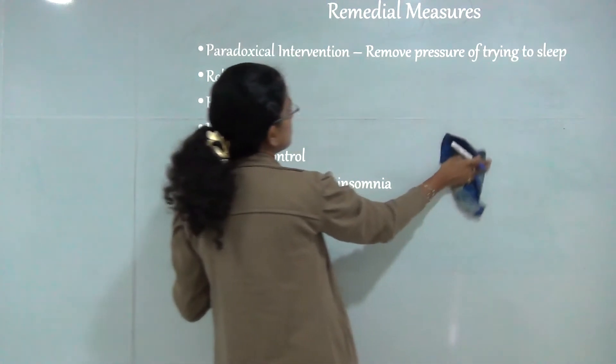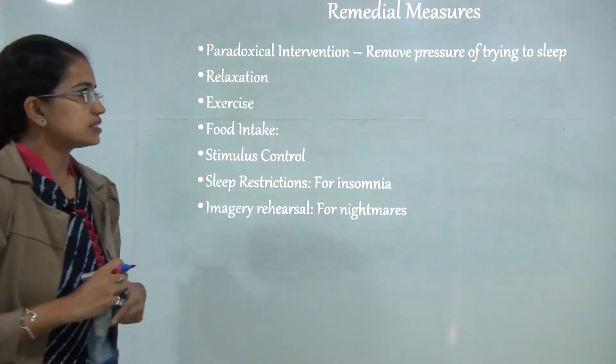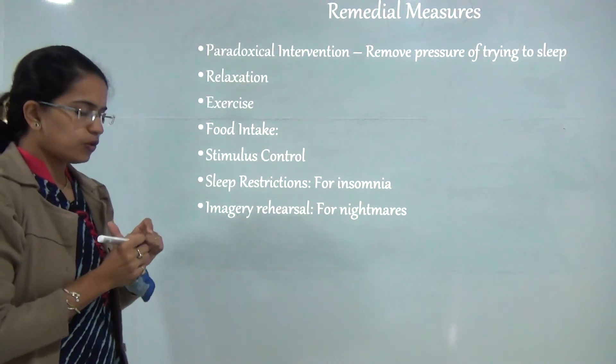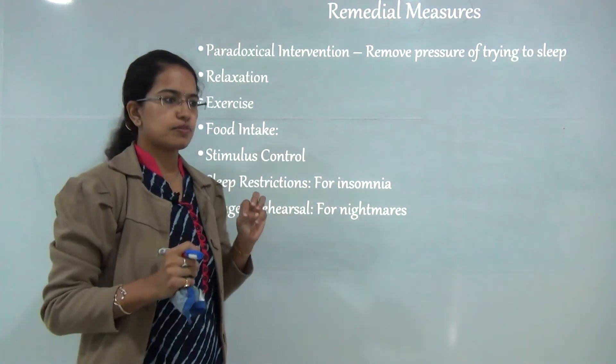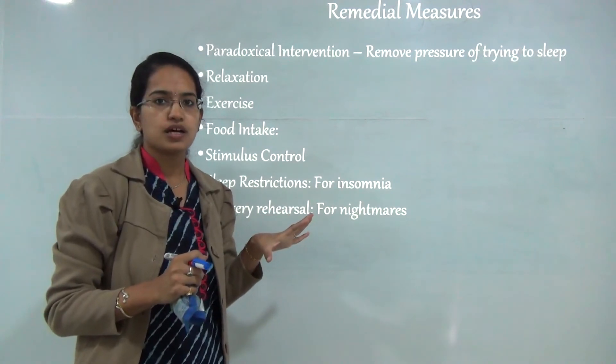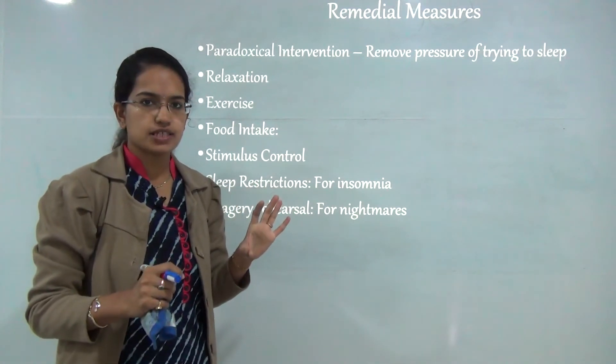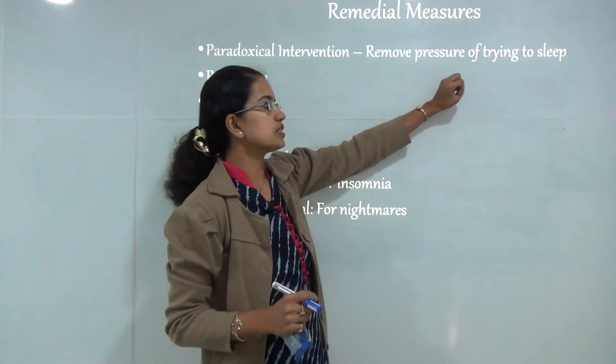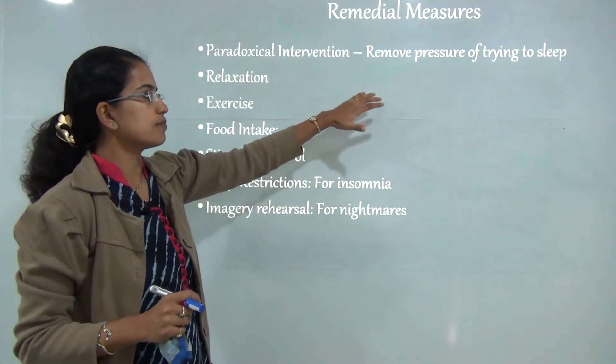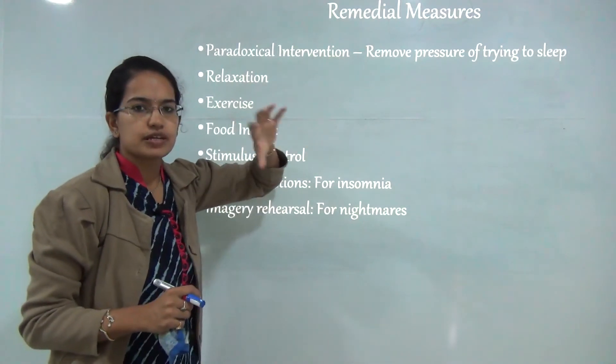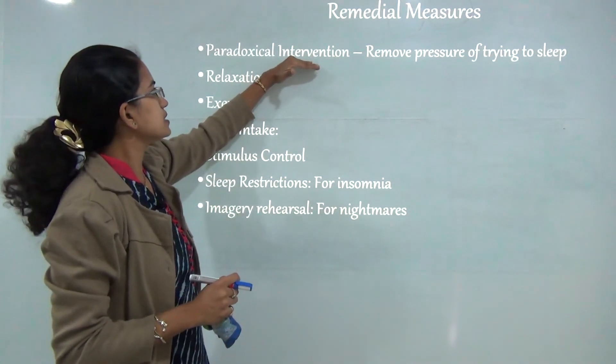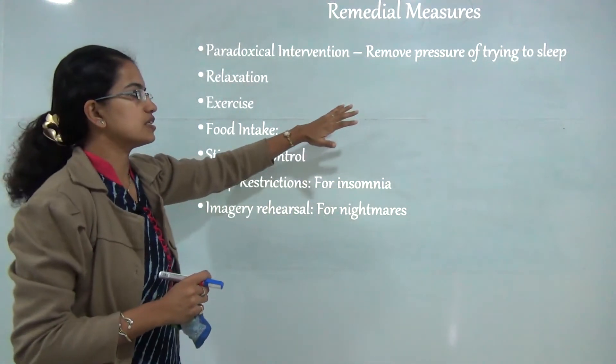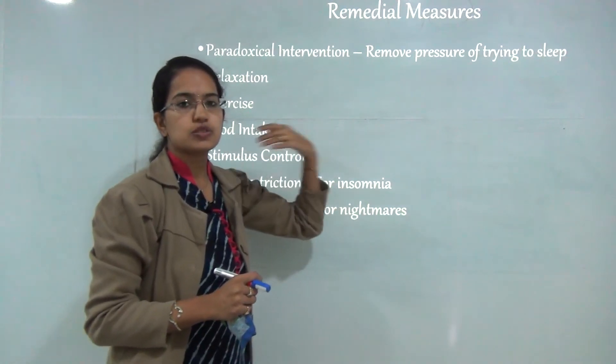The first is paradoxical intervention. It talks about removing the pressure to sleep. If a person is suffering from insomnia or a disease in which he is not able to have a sound sleep, a person should not ever be forced to sleep. Because if the person is forced to sleep, there would be kind of interventions. This treatment is known as paradoxical intervention, where you try to remove any kind of pressure asking a person to sleep.